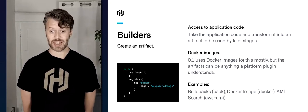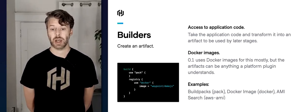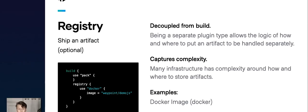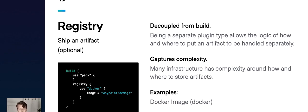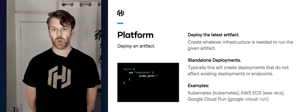In version 0.1, most builders are generating a Docker image — examples include Pack as well as a regular Docker image builder. The registry is an optional component that ships an artifact to a location usable by your deployment platform. It's decoupled from build because there are many ways to get an artifact from a local or build machine into an external location. An example of a registry plugin not shown here is AWS Elastic Container Registry, which is a separate plugin that automatically authenticates with AWS to send the image there.